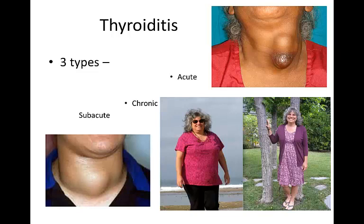Acute thyroiditis is a rare disorder caused by infection of the thyroid gland by bacteria, fungi, mycobacteria, or parasites. Staph infection is the most common cause. Infection typically causes anterior neck pain and swelling, fever, and dysphagia. Pharyngitis or pharyngeal pain is often present.